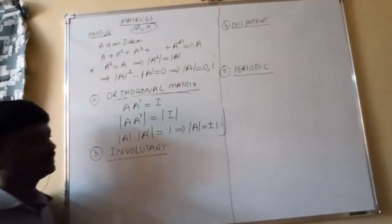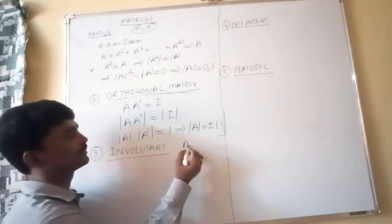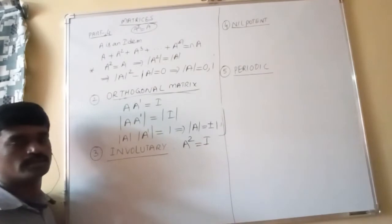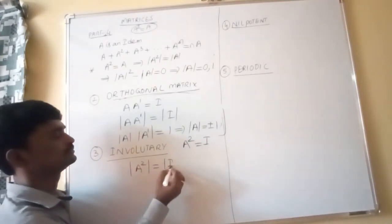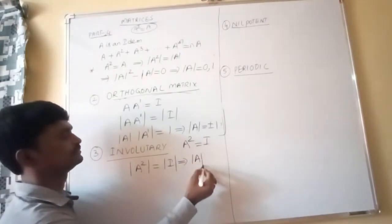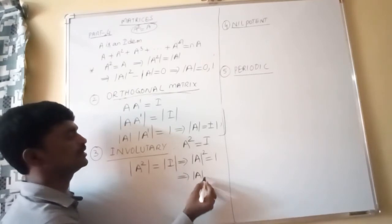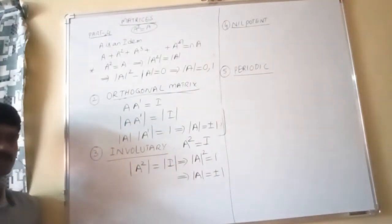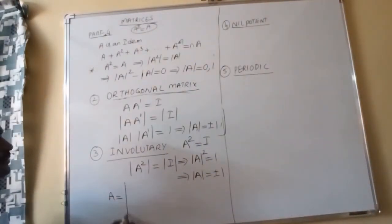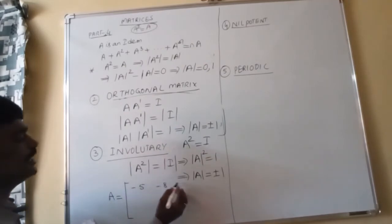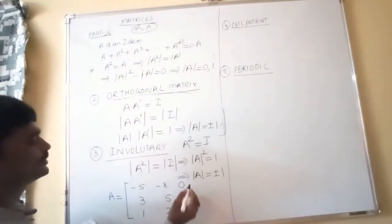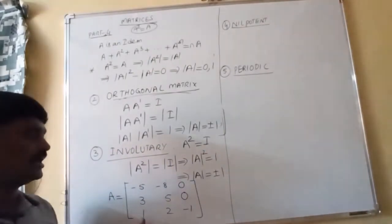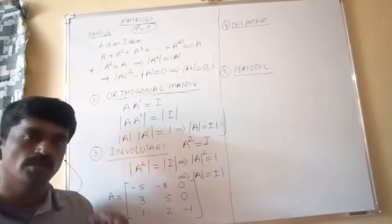Next definition: involutory matrix. A square matrix A is said to be involutory if A² = I. Applying the determinant: det(A)² = det(I) = 1, so det(A) = ±1. An example is the 3×3 matrix with first row −5, −8, 0; second row 3, 5, 0; third row 1, 2, −1. If you calculate A², you get the identity matrix, confirming it is involutory.